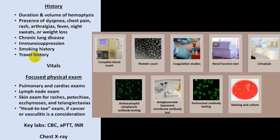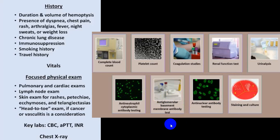History is very important, followed by proper physical examination and investigations: complete blood count, platelet count, coagulative studies, renal function test, urine analysis, and autoimmune antibody studies. To rule out Goodpasture syndrome, renal parameters and studies are helpful. Sputum culture for AFB and other organisms can also be done.